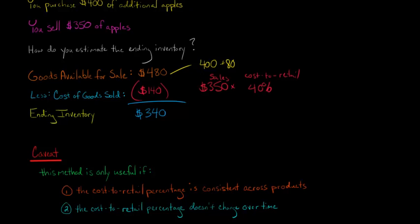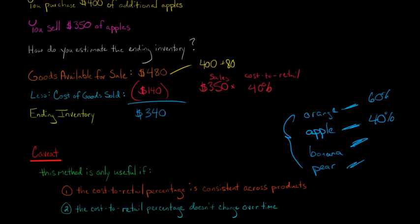And one is that there could be a problem if the cost to retail percentage, we basically need it to be consistent across products in order for this method to be useful, for it to have any kind of value. Now here, we just have one product. We just had an apple. But what if we were also selling bananas? So if we were also selling a banana, and then we also had another product that was a pear, we also had another product that was an orange, so we have four different products, and maybe the cost to retail percentage is different for each of these products. Now we were assuming that the cost to retail for the apple was 40%, but what if it was 60% for oranges, and 30% for bananas, and we can't just go and use the one percentage across all the products. So this could create a real problem.